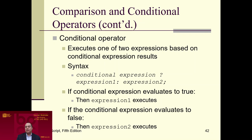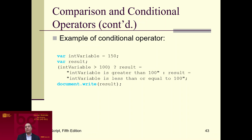The conditional operator uses a condition followed by a question mark. If the condition is true, expression one executes; if false, expression two executes, separated by a colon. For example: if 'inVariable = 150', is inVariable greater than 100? That is true, so result equals the true expression. If inVariable were 50, it would be false and we would show the false result — that it is less than or equal to 100.